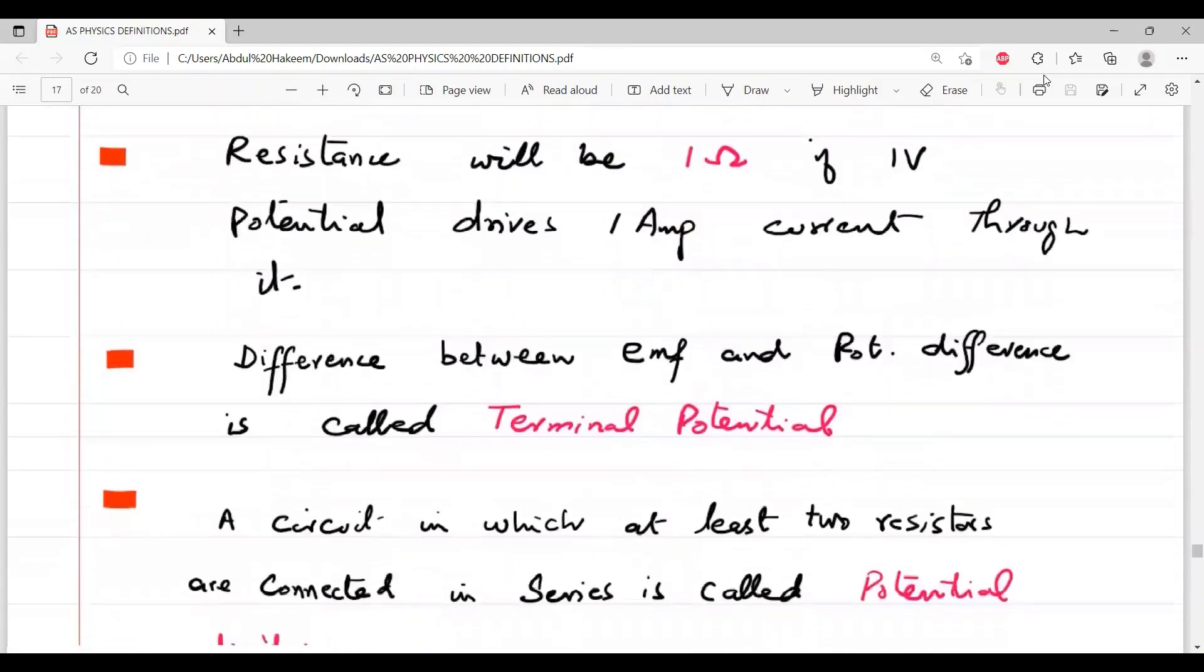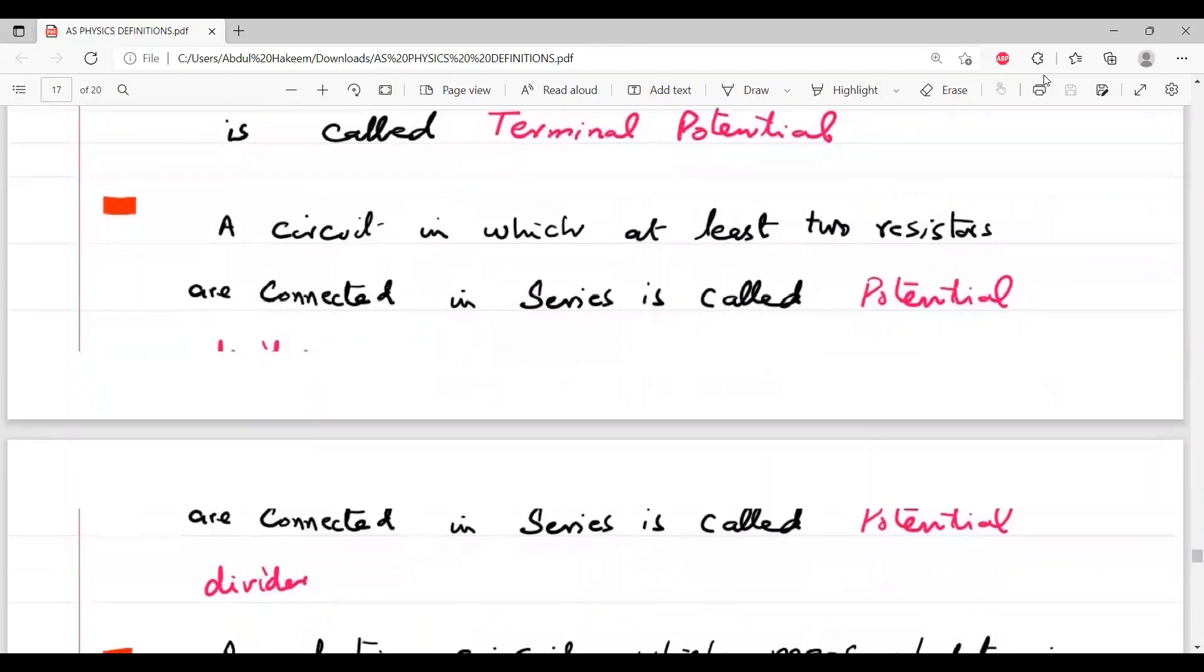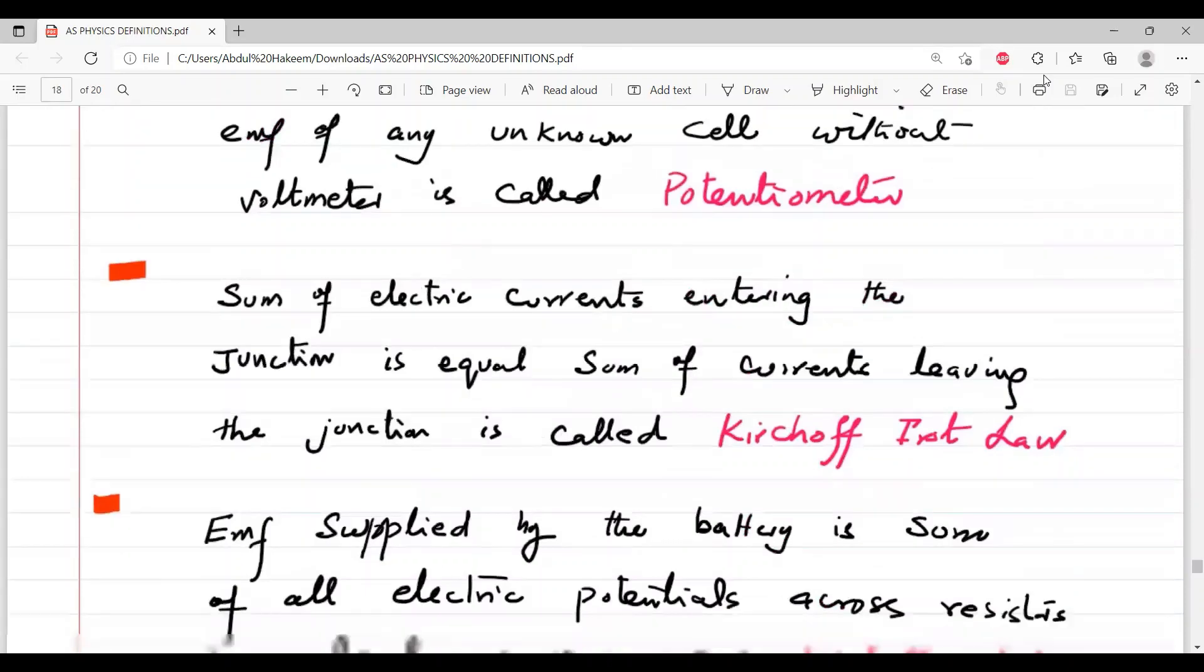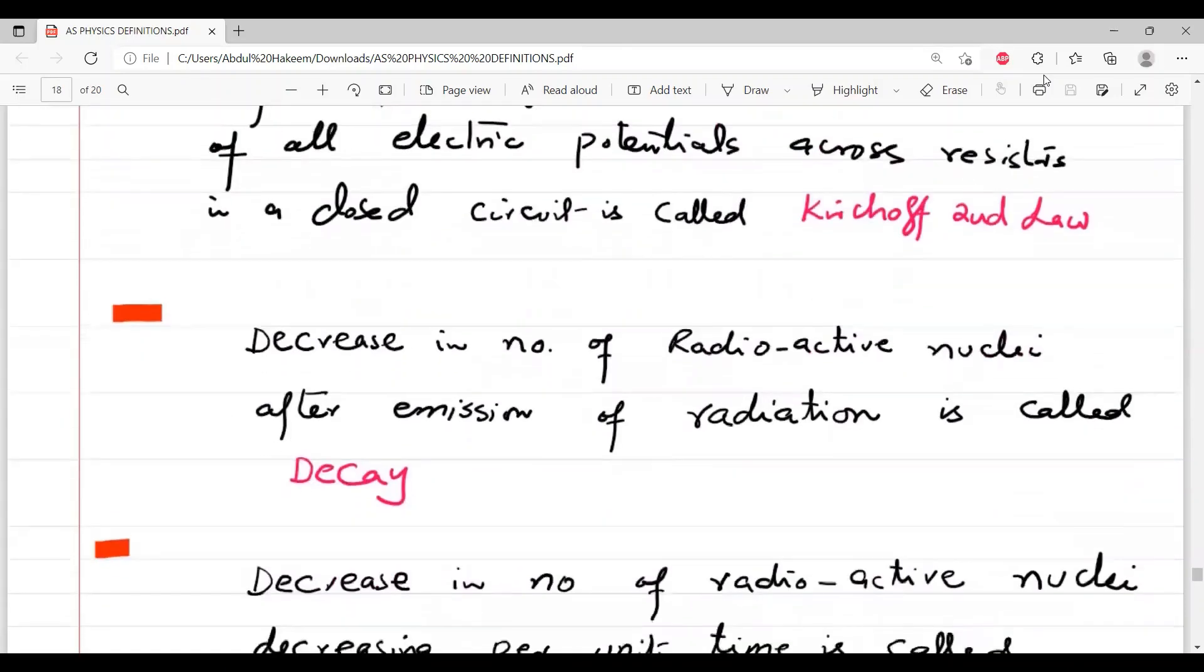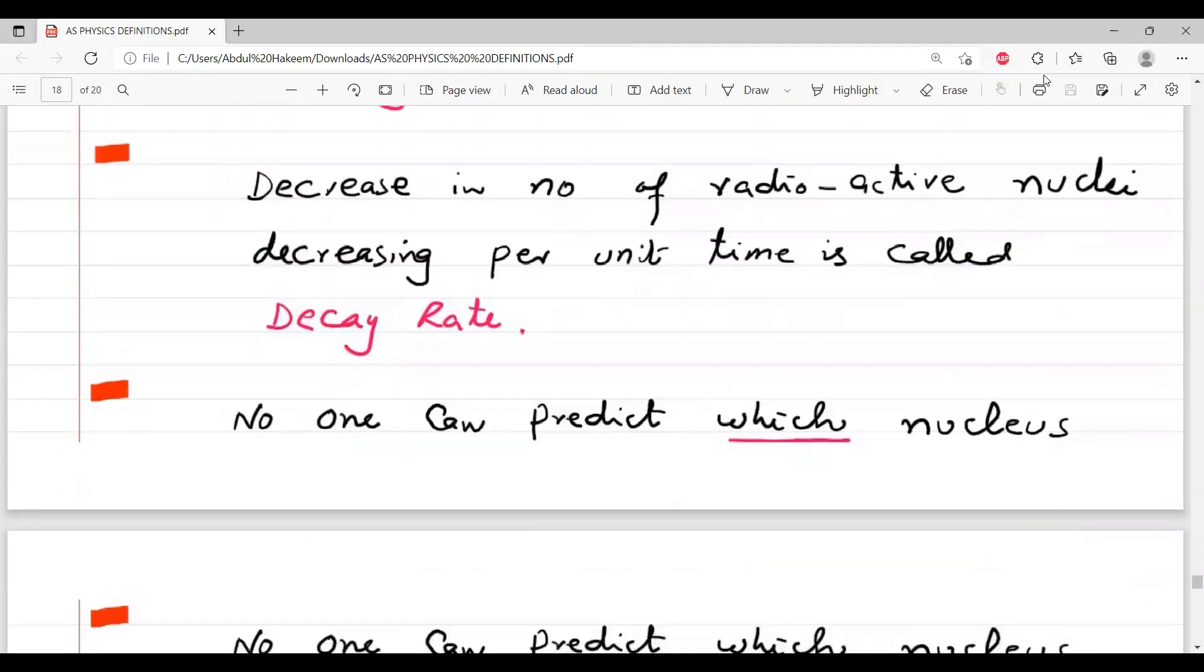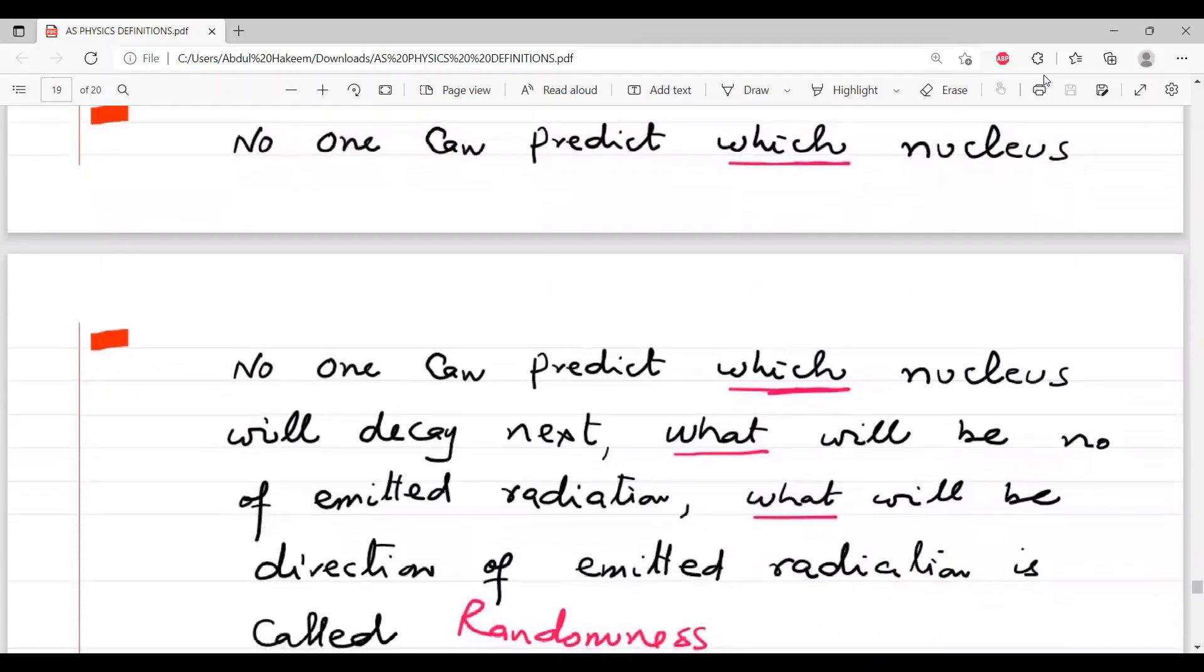Terminal potential, then potential divider, potentiometer, Kirchhoff first law, Kirchhoff second law. Next is decay, decay, decay rate, decay rate, and then this random behavior.